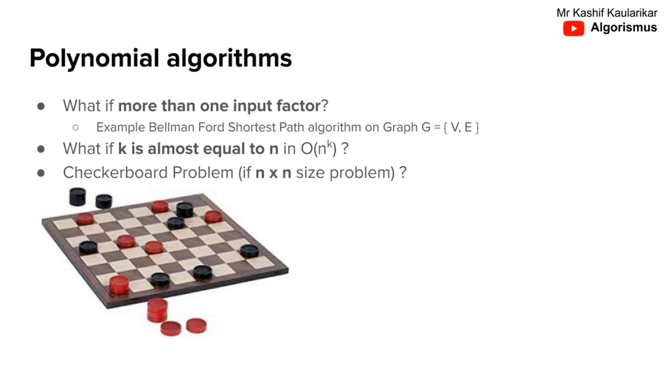For example, in the case of the checkerboard problem, if the board is size 8 by 8, then it's believed to be a polynomial time problem. But if the board is size n by n, then it's no longer a polynomial algorithm.